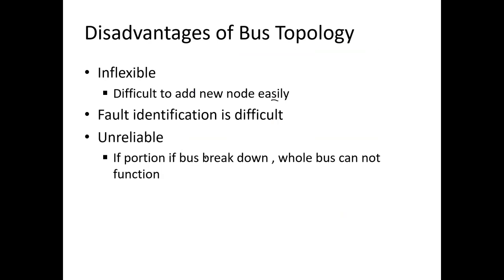Next is fault identification. In bus topology, fault identification is difficult. Bus topology drops the signal at every node, so if one of the nodes goes down, we cannot identify the fault easily. Whenever there is difficult fault identification, there is also difficulty in troubleshooting.